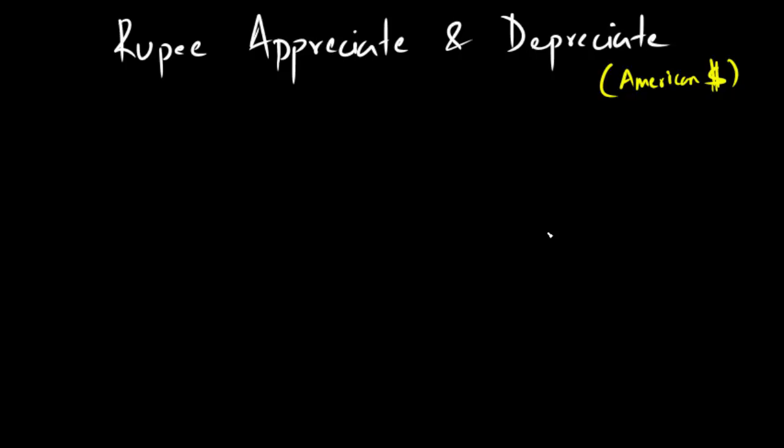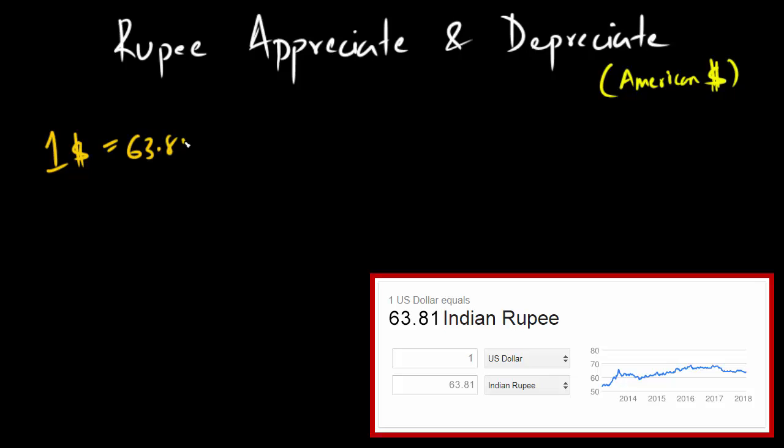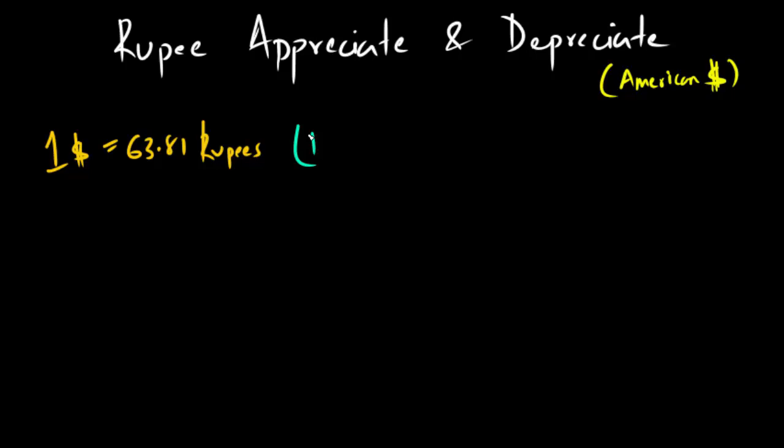You must have got a notification through a news app on your mobile or you must have read it in the newspaper that rupee has become stronger or weaker or crashed or gained some points against the American dollar. All of this simply means that the value of rupee has either increased or decreased against the American dollar. I'll quickly show you an example. As of today, 23rd January 2018, 1 US dollar is equal to 63.81 Indian rupees. Suppose you read the headlines of a newspaper that says rupee has depreciated or it has lost some points. That means rupee has become less valuable with respect to the dollar.